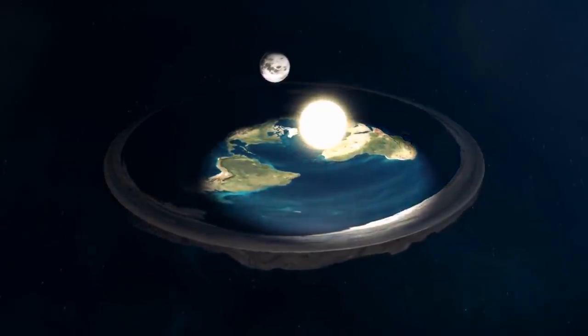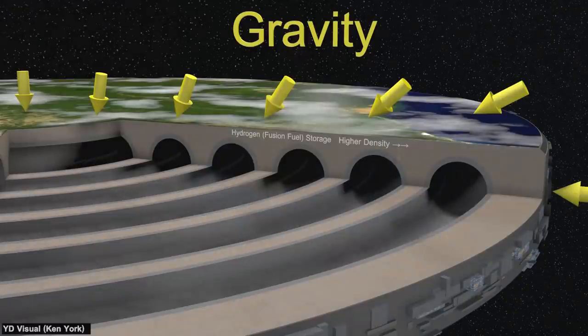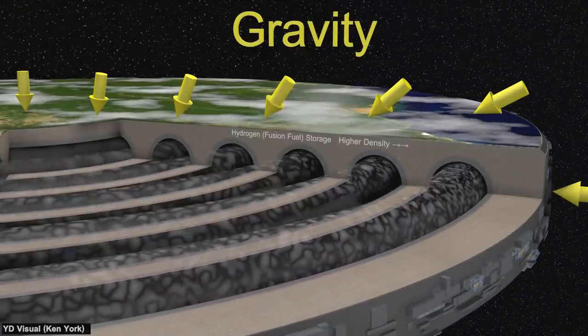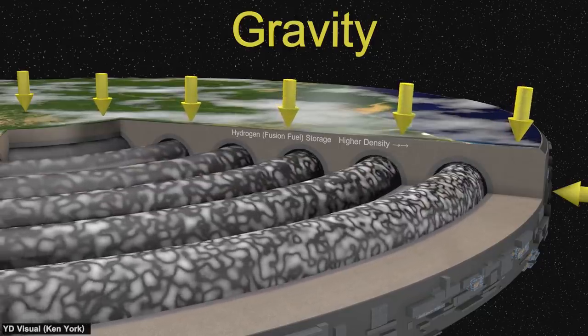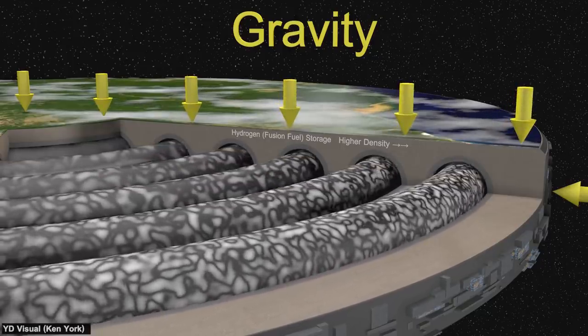However it is worth noting that a self-repairing system can still die. Indeed every known self-repairing system has a lifespan, with possible exceptions of some strange critters like jellyfish, lobsters, or hydras.